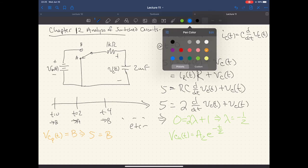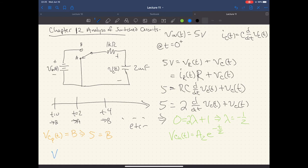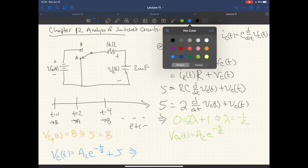And I plug that through the equation. The derivative of B is equal to zero. I end up with five is equal to my particular solution, which is B, not very exciting. So we end up with a total solution of V_C(t) is equal to A_2 e to the minus t over two plus five. That's it.